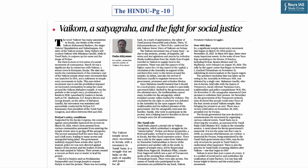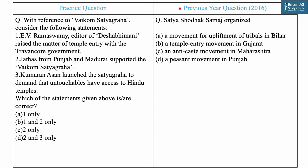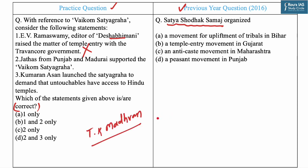The next question is based on an article about the famous Vaikom Satyagraha, which happened in Kerala. The article highlights how it was a significant fight for social justice. Social reform movements are an important theme in UPSC examination. Statement one says E.V. Ramaswamy, editor of Desha Bhimani, raised the matter of temple entry with the Travancore government — this is incorrect. It was T.K. Madhavan, a prominent social reformer and editor of Desha Bhimani, who took up the issue of temple entry with the Travancore administration.